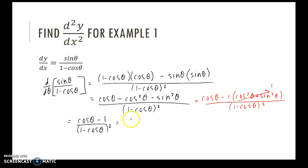So now I have cosine theta minus 1, all divided by 1 minus cosine theta quantity squared. When we compare these numerator and denominators, the numerator, if I factor out another negative 1, is the exact opposite of one of the factors of the denominator. So the derivative of dy/dx is negative 1 over 1 minus cosine theta.